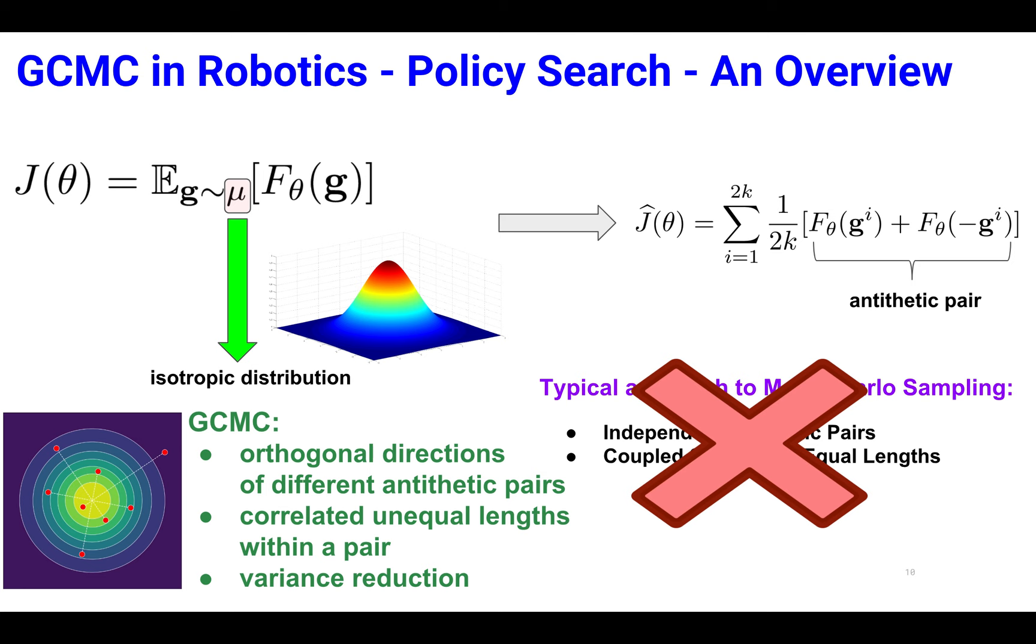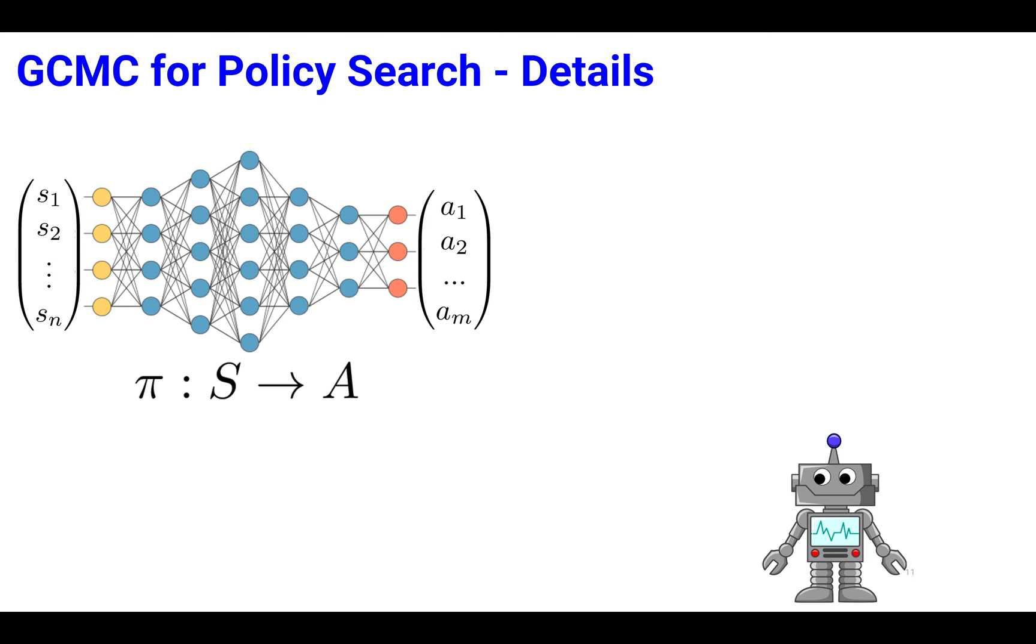GCMC leads here to more accurate estimation by correlating directions of different antithetic pairs and using unequal lengths of samples within a couple.